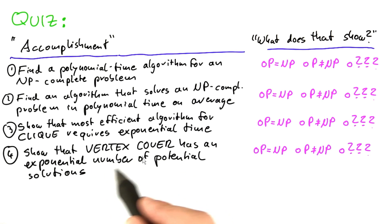What if you showed that the vertex cover problem has an exponential number of potential solutions that any algorithm has to go through?